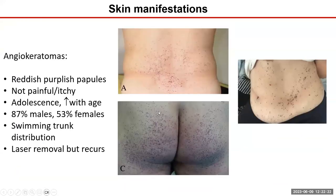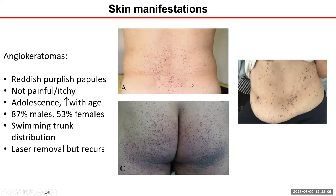The classic skin manifestation described by Fabry and Anderson is angiokeratoma — small reddish, bluish, purplish papules. They don't hurt and don't itch, but are present in a bathing trunk distribution: from the umbilicus to the tops of the thighs, on the back, front, buttocks, scrotum, and abdominal wall. They're cosmetically unpleasant — patients try to have them lasered out, but they come back. They're more common in men. As cardiologists, you have to specifically ask or look, because you may only find tiny ones in the creases or scrotum, and patients themselves may not be aware.